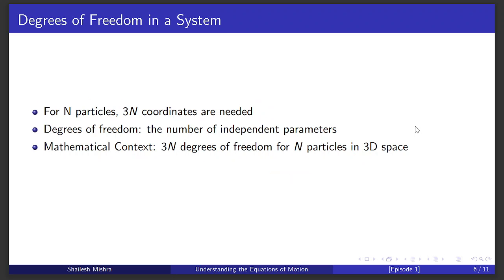In a system with multiple particles, say n of them, we need 3n numbers to describe all their positions. This is because each particle requires three numbers x, y, and z to pinpoint its location in space. Thus, the total count of independent variables we need, 3n, is what we call the degrees of freedom of the system.